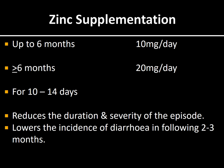Apart from ORS, zinc is a must in a child with diarrhea. For children up to six months — 10 mg per day; for more than six months — 20 mg per day, for complete 10 to 14 days. This aids recovery from diarrhea and prevents malnutrition due to damage to the gastric epithelium.